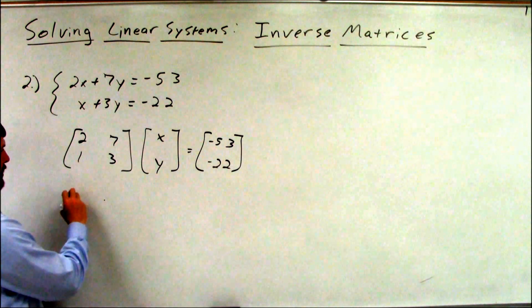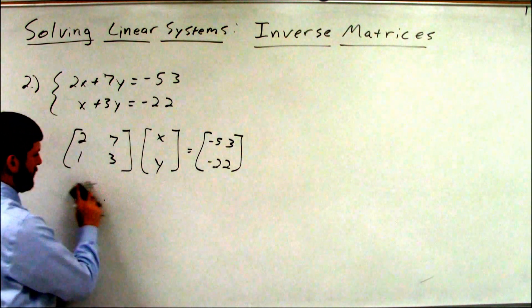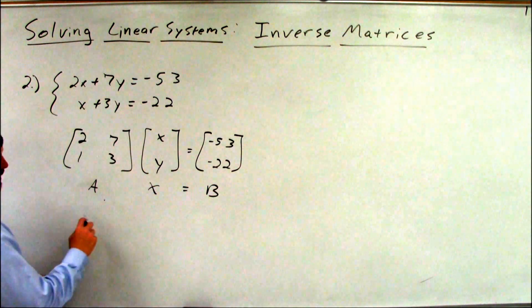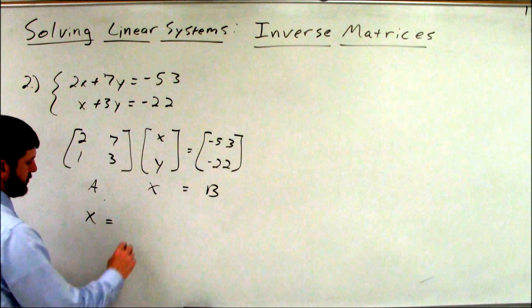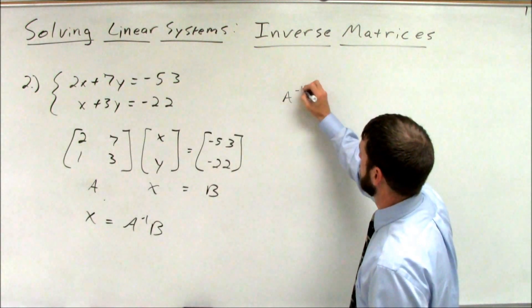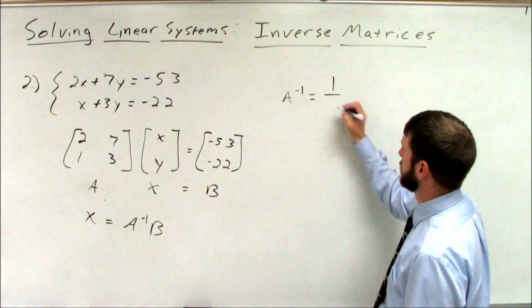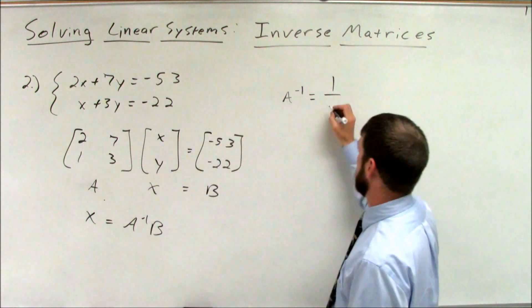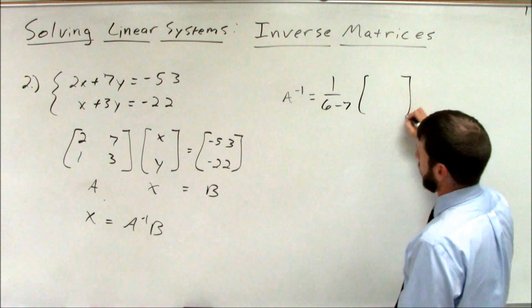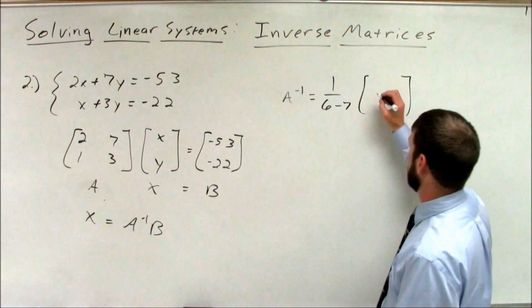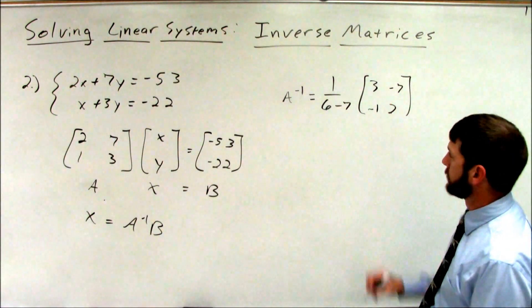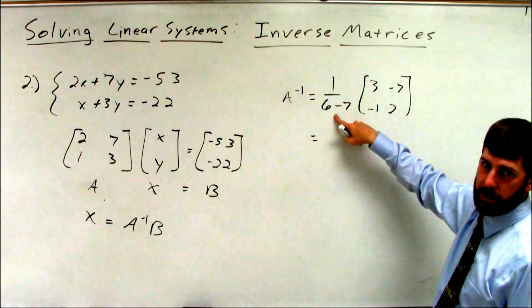Now we rearrange so that matrix A times matrix x equals matrix B becomes matrix x is equal to A inverse times B. So let's set it up. What is A inverse? 1 over the determinant. So my determinant, 2 times 3 is 6. Minus 7 times 1 is 7. Times our adjoint. Swap the left-hand diagonal. Change the signs on the other two. Do your math. 1 over 6 minus 7.